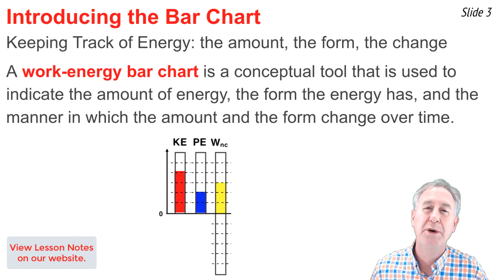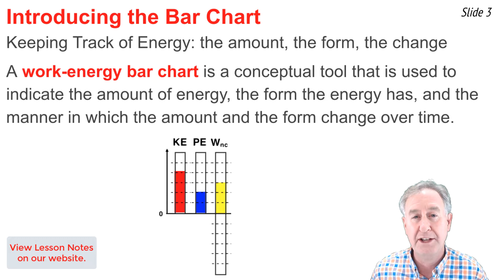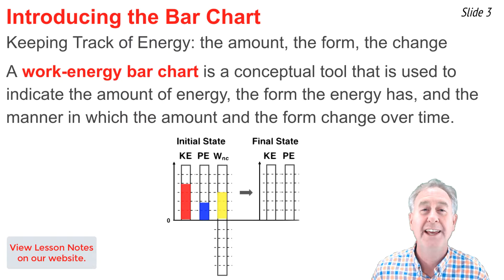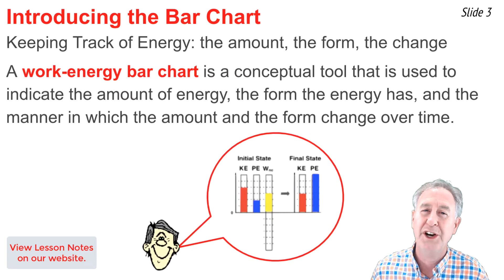The work done by non-conservative forces could be positive or negative, depending on whether energy is inputted into the system or removed from the system. Rather than having a single set of bars, we have two sets — one for the initial state and one for the final state. Once you've finished filling it all in, you have communicated in bar chart form what has happened to the form and the amount of energy over the course of time.